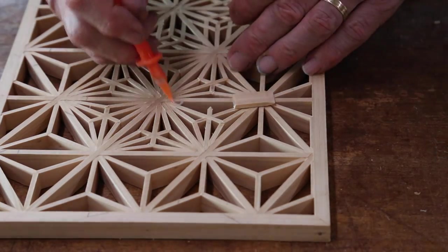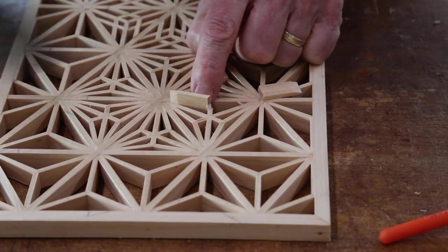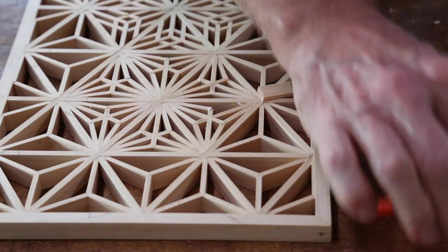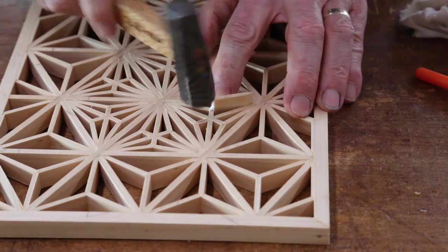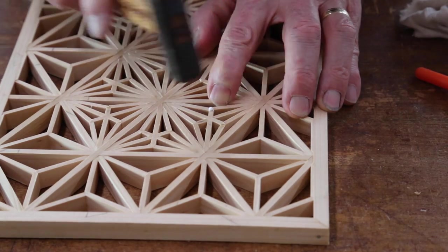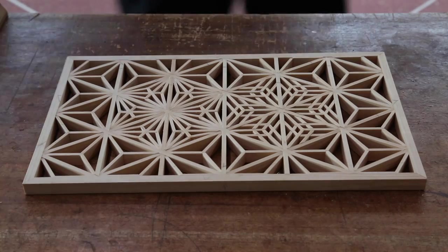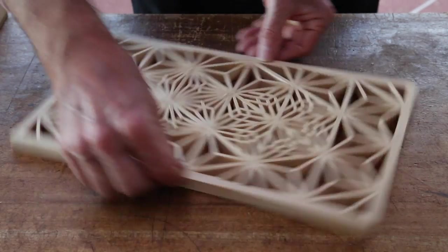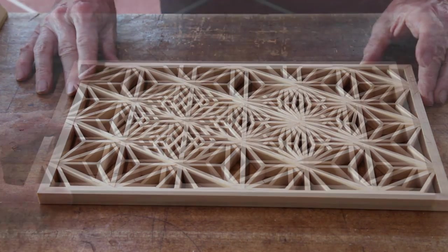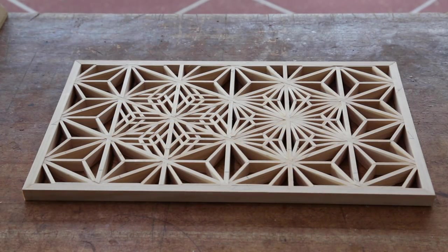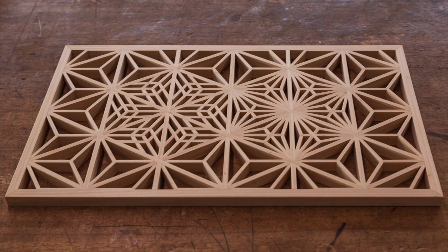Continue this process until the last two locking pieces are in. And that's it, the Kawari Yaesakura and Yae Asa no Ha completed, and also the Tsuno Asa no Ha for good measure. All that's left now is to clean up the front and back and it's all finished.